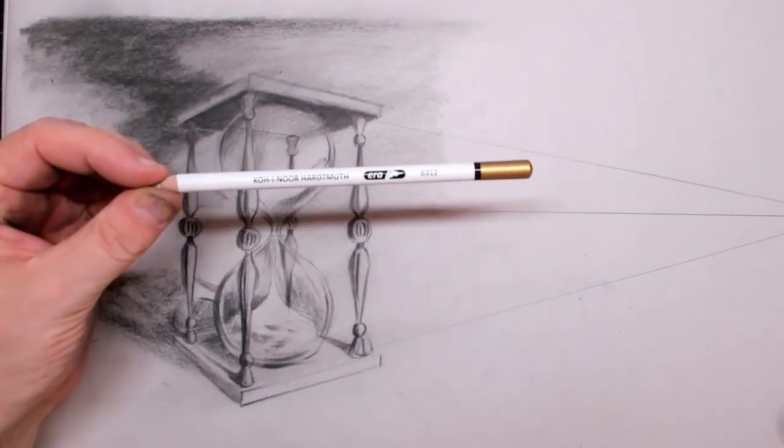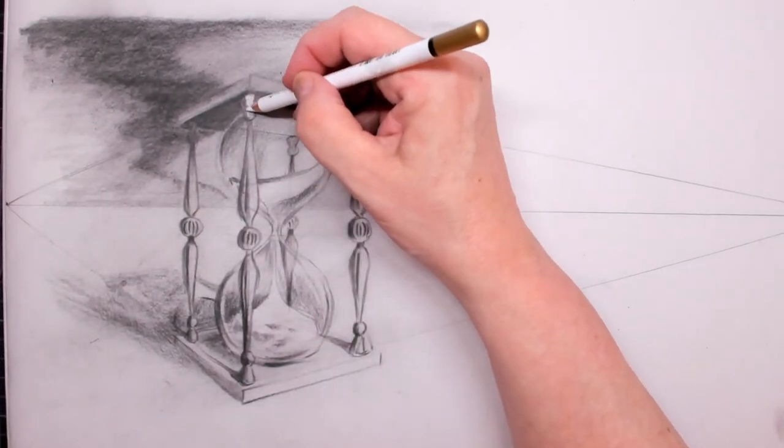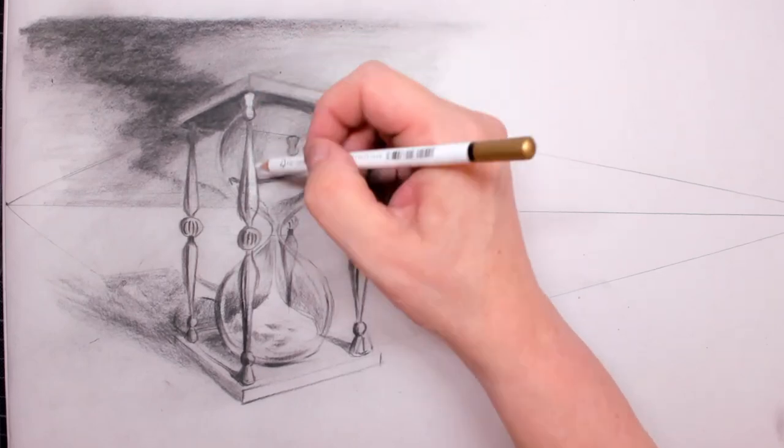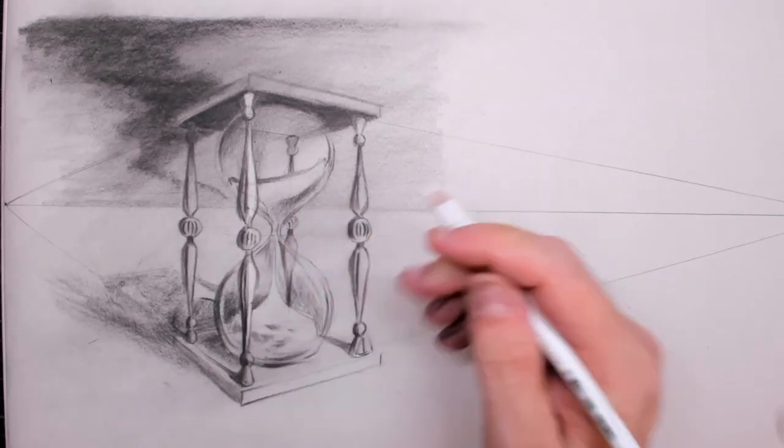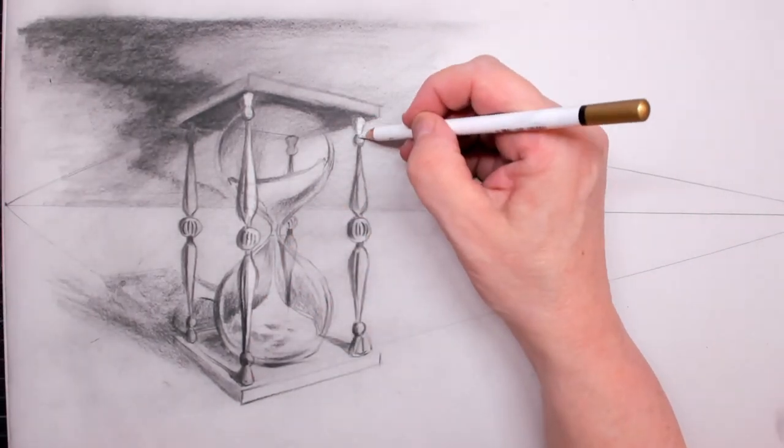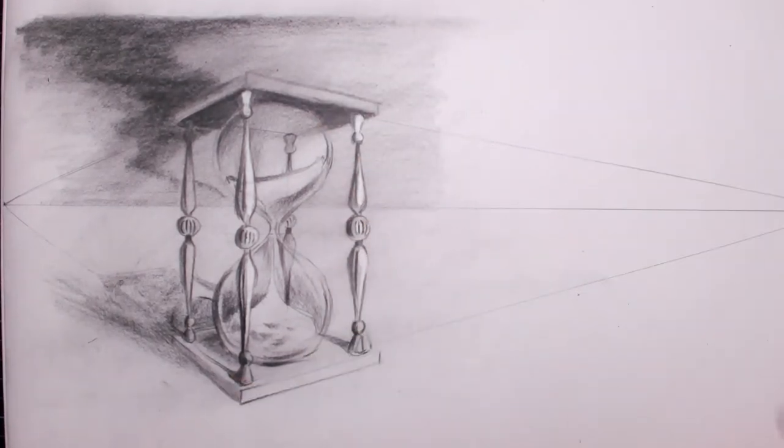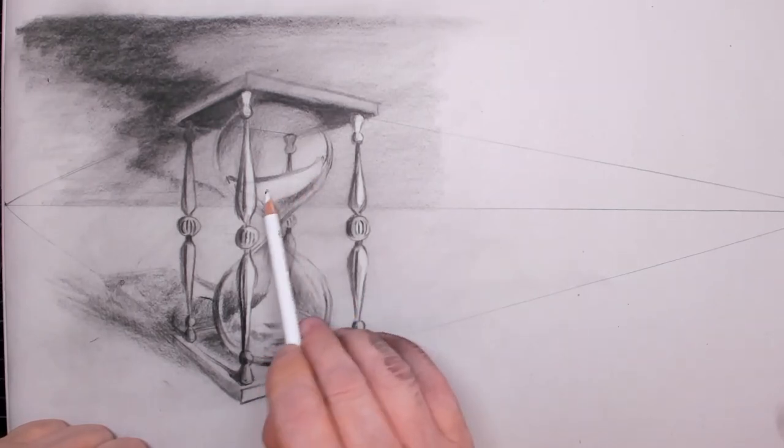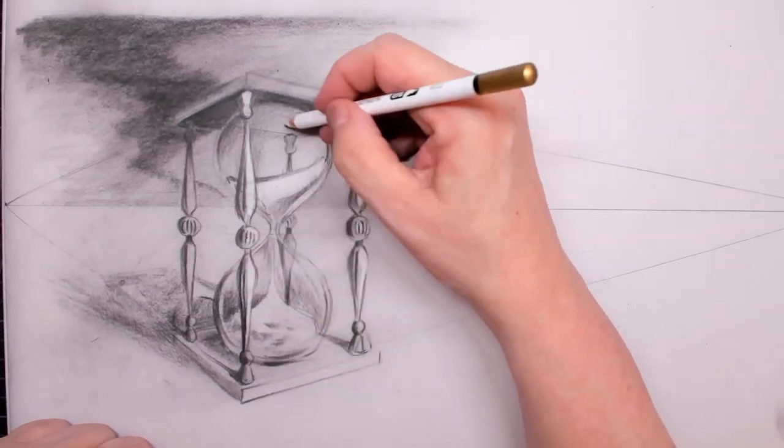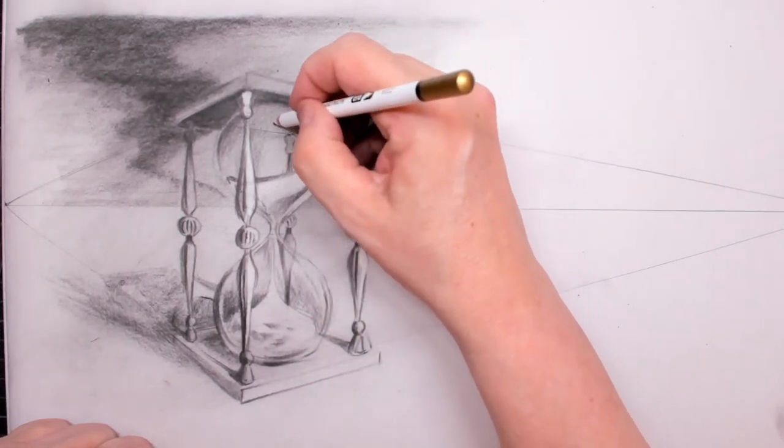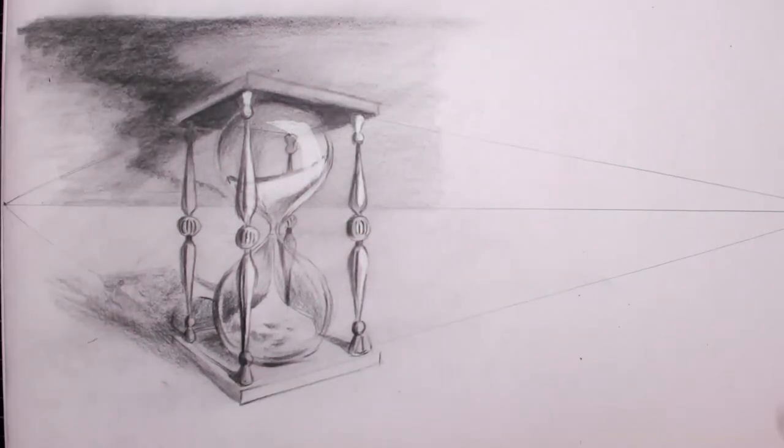I'm using my Koh-i-Noor hard putty pencil eraser, and I use that pencil eraser not as a correcting device but actually as a drawing device because now I can start to draw in the light that is in my drawing. The light is coming from the right top, and I can also use it to draw in the glass effect, which is awesome.